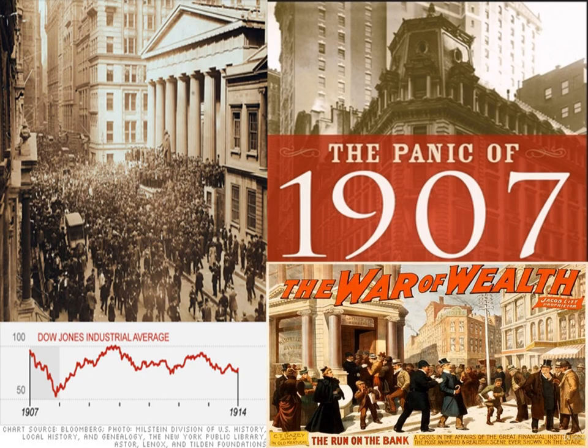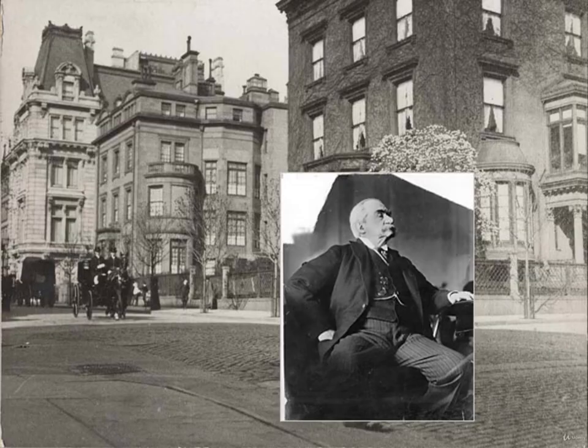The U.S. banking system limped along until the Wall Street Panic of 1907. Speculative bubbles in the real estate and stock markets burst. Several long-standing New York banks failed. The unemployment rate reached 20% in the fall of 1907. Millions lost their deposits as thousands of banks collapsed across the nation. The panic ended only after J.P. Morgan intervened, personally making temporary loans to key New York banks and other financial institutions.